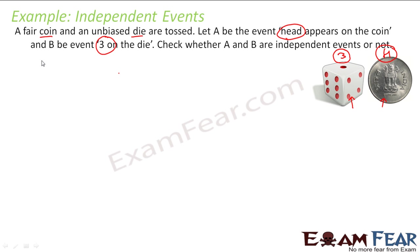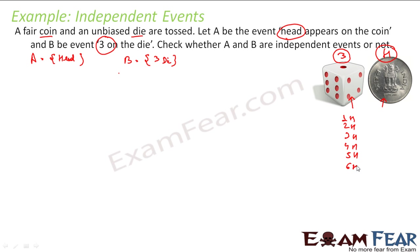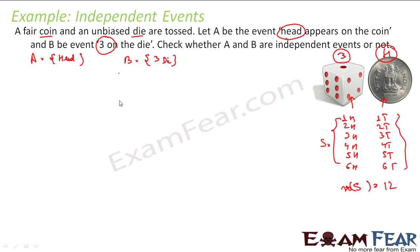But let us try to prove this using formulas. A contains the head element and B contains three on the die. If we throw these two together, the sample space will be: 1H, 2H, 3H, 4H, 5H, 6H, 1T, 2T, 3T, 4T, 5T, 6T. So there are 12 elements in the sample space.